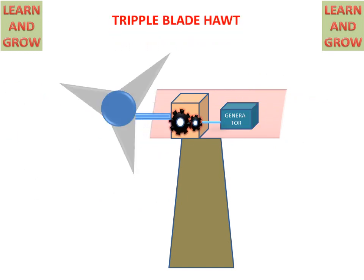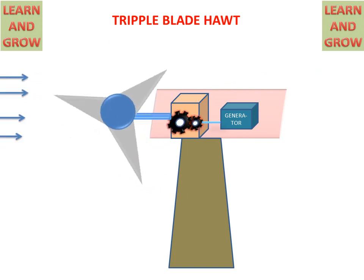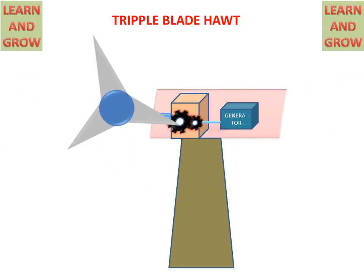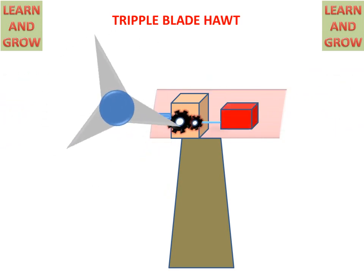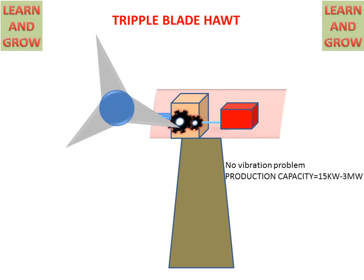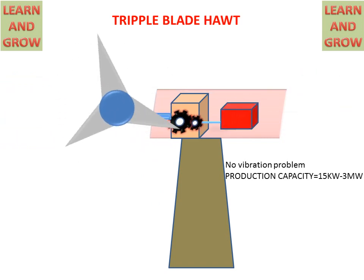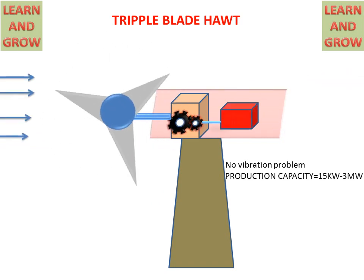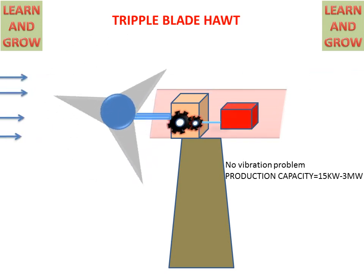In triple blade horizontal axis wind turbine, when upside wind comes from the left hand side, the rotor or triple blade starts rotating. This rotation is converted by the gearbox at higher speed, and the generator connected to the gearbox creates electricity. There is no vibration problem in this kind of HAWT, and production capacity can vary from 15 kW to 3 MW. So this is the best among all three kinds.